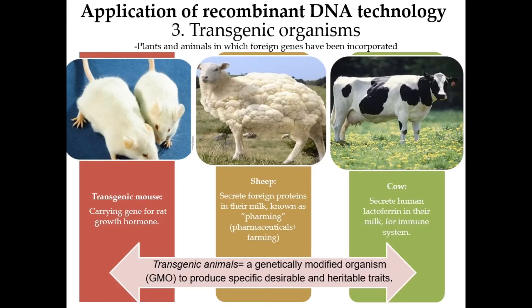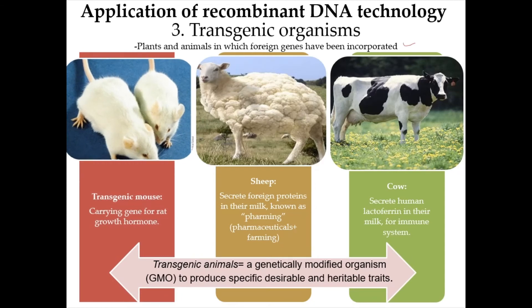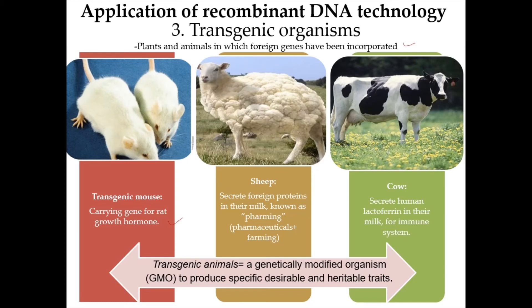The next application of recombinant DNA technology is transgenic organisms — plants and animals in which foreign genes have been incorporated. The first example is a transgenic mouse that carries genes for rat growth hormone. The second example is sheep that secrete foreign proteins in their milk, used to prevent blood clots during surgery for patients at high risk due to a rare hereditary disease. This is known as pharming, the combination of pharmaceuticals and farming.